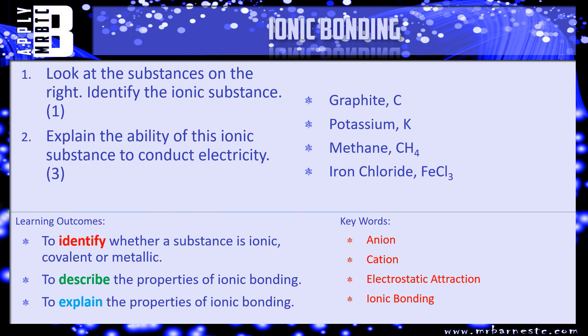Let's have a look at what the examiner can ask you on this topic. Question one: look at the substances on the right, identify the ionic substance. Hopefully by now you've remembered it's a metal and a nonmetal, so which of those four has a metal and a nonmetal in it? That's your ionic substance. Question two: explain the ability of this ionic substance to conduct electricity. Think back to what you've just watched — when can it conduct, when can't it conduct, and why? Pause the video, have a go, and we'll see how you've done in a minute.